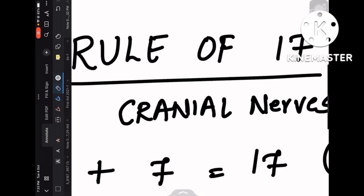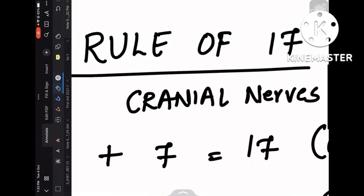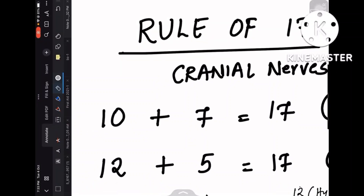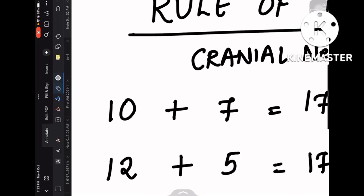Hey guys, here I am with a new video on the Rule of 17 in cranial nerves. There are a few important cranial nerve lesions that we need to know: the 10th nerve, 7th nerve, 12th, and 5th nerve. We usually tend to confuse — for example, if the 10th nerve is involved, is the uvula deviated to the ipsilateral side or the contralateral side? Similarly, when the 7th cranial nerve is involved, is the angle of the mouth towards the ipsilateral or contralateral side? These are areas where we tend to answer exactly the opposite in exams.